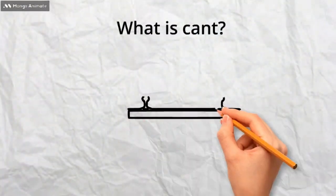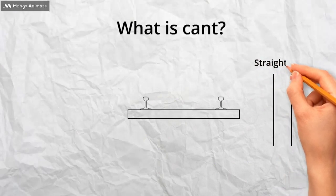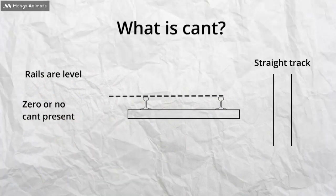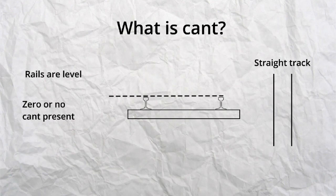Let's see how this looks in practice. When the track is straight, the rails are at the same level relative to each other. As there is no difference, this is zero cant.